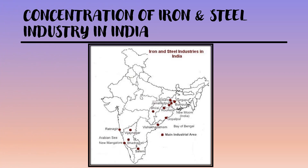In India, the iron and steel industries are concentrated in the Chhota Nagpur and Deccan Plateau region. The main centers are Jamshedpur and Bokaro in Jharkhand, Kulti in West Bengal, Bhilai and Raurkela in Chhattisgarh and Odisha respectively, Durgapur again in West Bengal, Bhadravati and Vijayanagar in Karnataka, and Vizag in Andhra Pradesh and Salem in Tamil Nadu.